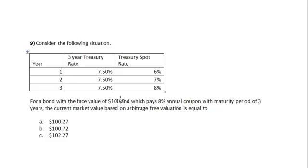The payment that is going to be received in the first year is equal to $8, because 8% annual coupon on $100 will amount to $8. The second year it will be $8, and the third year it will be $108.